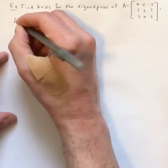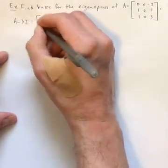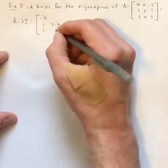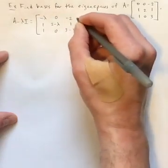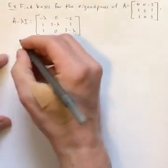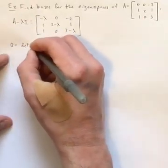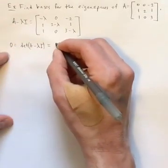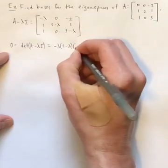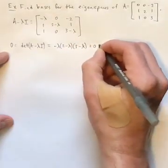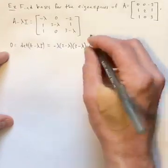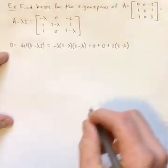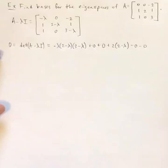So as we've seen, A minus lambda I, we can just subtract lambda off of the main diagonal entries and leave all of the other entries alone. And then I can say that 0 equals the determinant of this. And so we will use the diagonal rule again. So that will be negative lambda times 2 minus lambda times 3 minus lambda plus 0 plus 0 minus negative 2 times 2 minus lambda times 1 and then minus 0 and minus 0 again.